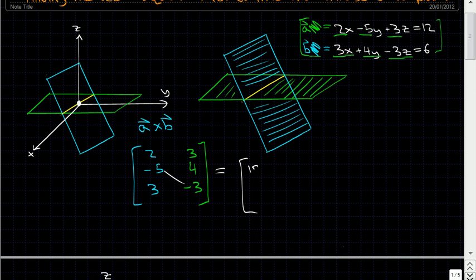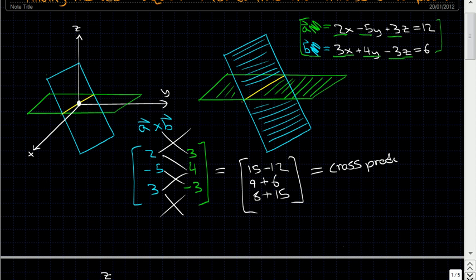But to take the cross product, let's take 15 minus 12, and that'll give us 9 minus plus 6, and 8. Well, this is going to be plus again too, 8 plus 15. And so our cross product equals, now we have x, y, and z coordinates. This will be 3, this will be 15, and then we'll also get 23 here. So this cross product is the equation for this line here. It is the line that gives us the direction of the intersection.